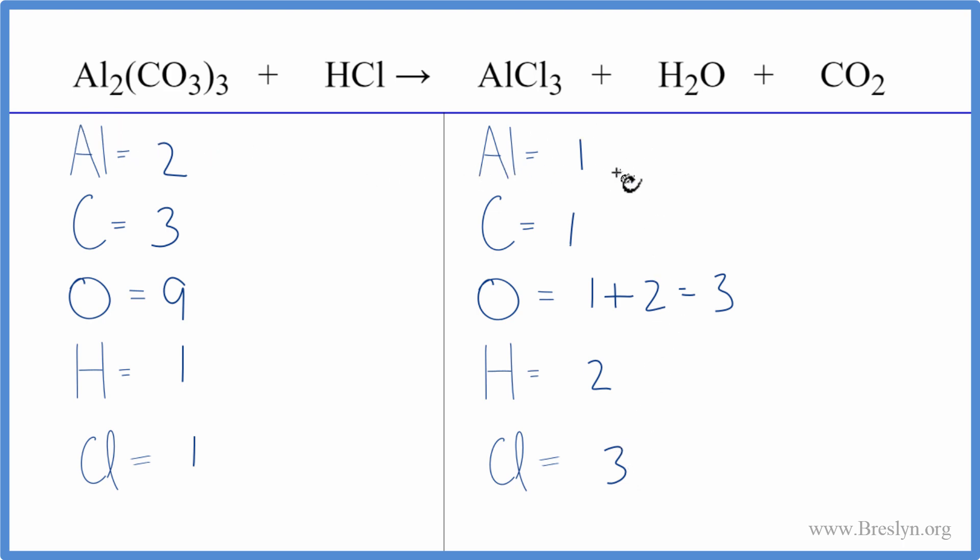Let's just start by balancing the aluminum. We could put two in front of the aluminum chloride, that would give us one times two. So the aluminums, those are balanced. Two times the three, that gives us six chlorine atoms.